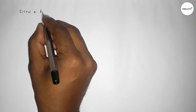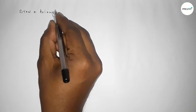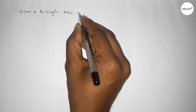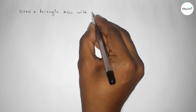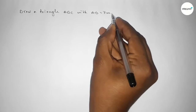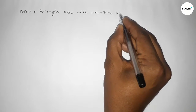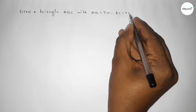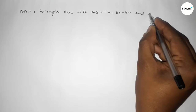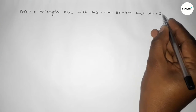Hi everyone, welcome to SI Share Classes. Today in this video we have to draw a triangle ABC with AB equal to 7 centimeters, BC equal to 4 centimeters, and AC equal to 5 centimeters. So let's start the video.